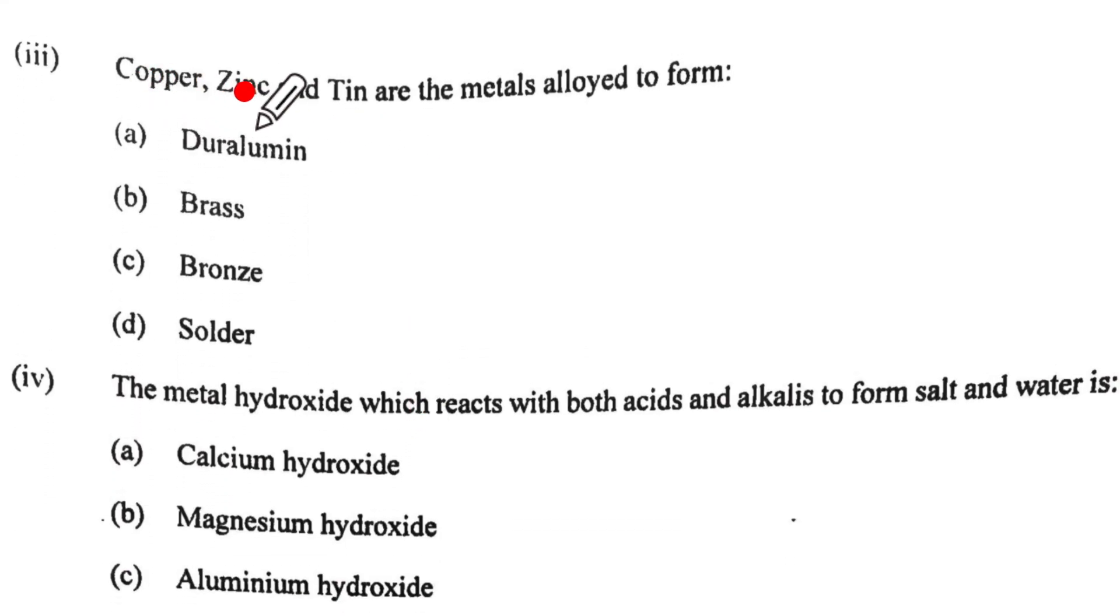The third one. Copper, zinc, tin are metals alloyed to form. Now this is Cu, Zn and Sn so it will be bronze. You had to know this by heart. So the third one is going to be C option.